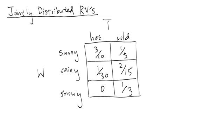We've spent a lot of time now talking about what are called jointly distributed random variables, which is just a fancy way of saying that we know for some random variables what their joint probability table is.